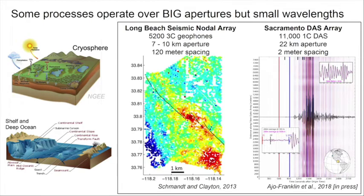When we think about studying earth systems, there are two length scales of interest: first, the aperture or maximum length across the experiment, and second, the minimum resolution or the distance between two sensing points. Whether it's the cryosphere, the deep ocean, fault boundaries on continents, or offshore, there are processes going on that are difficult to study with conventional seismic data sets. A recent study by Schmantt and Clayton took over 5,000 three-component geophones into Long Beach, Southern California, covering over 10 kilometers with geophones spaced about 100 meters apart, revealing fault-trapped waves, local earthquakes, and amplification due to the fault zone.